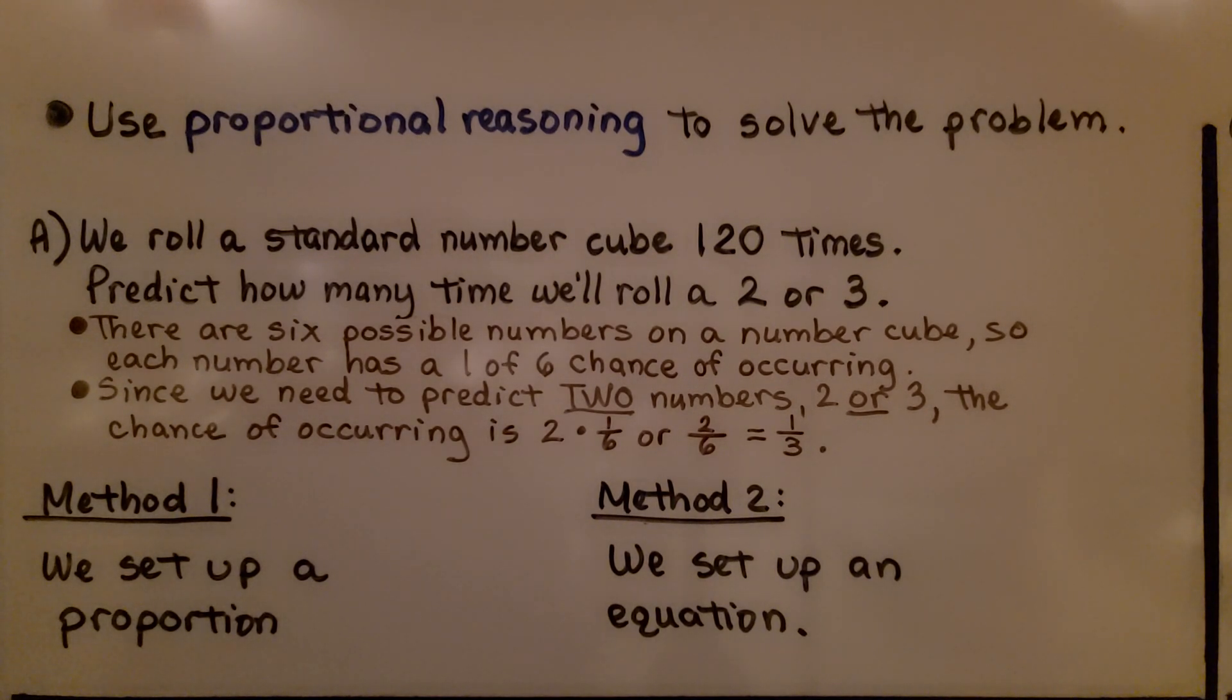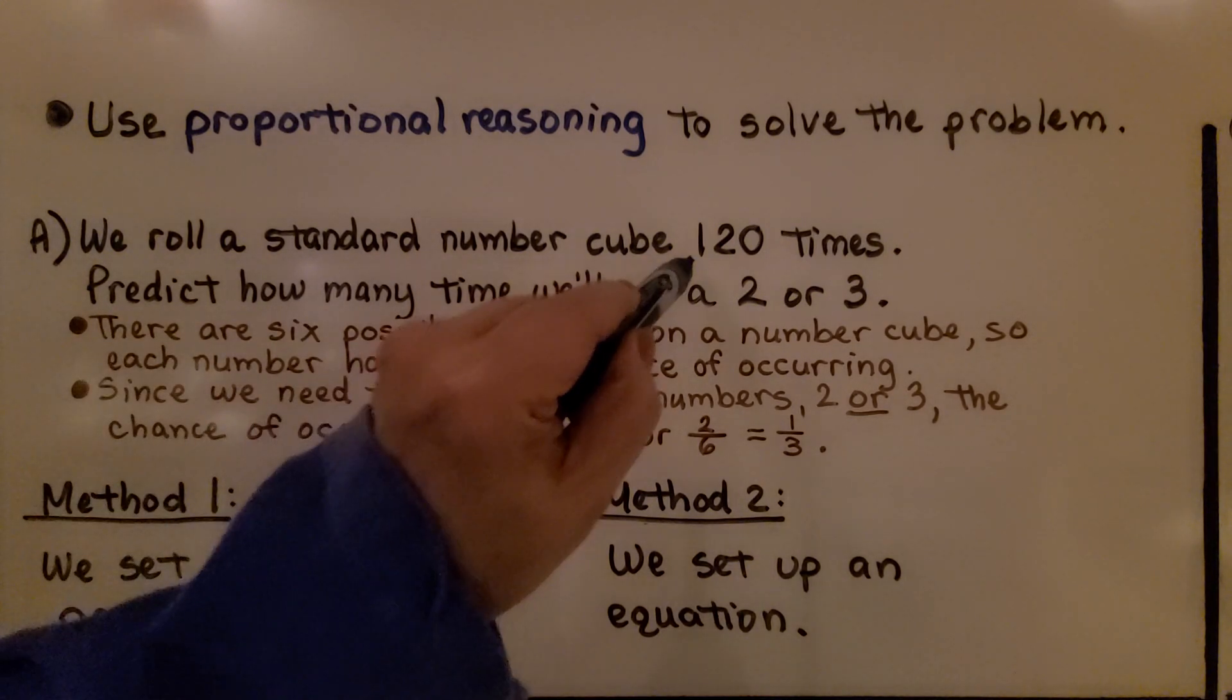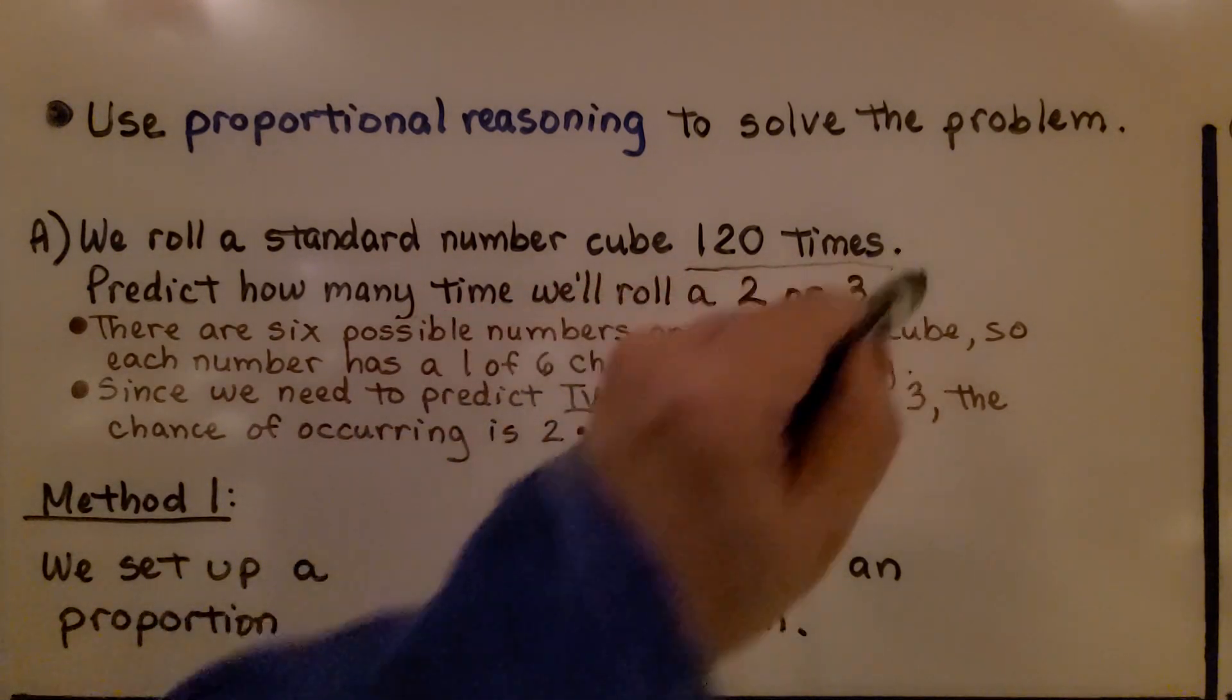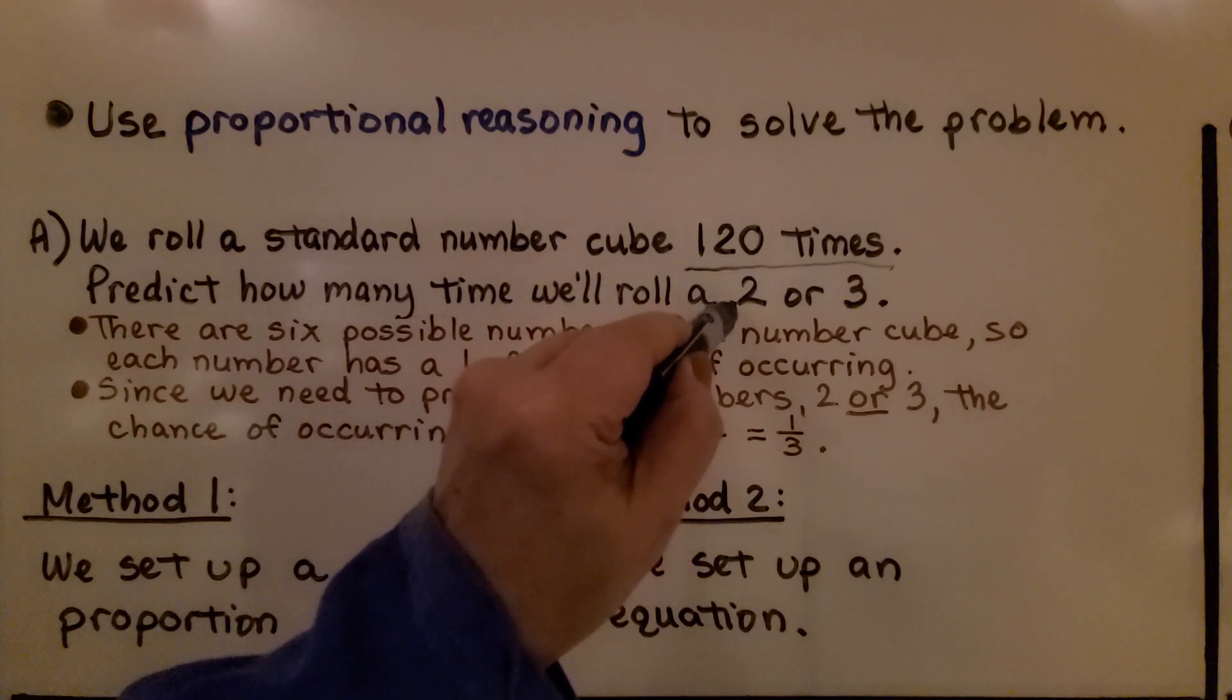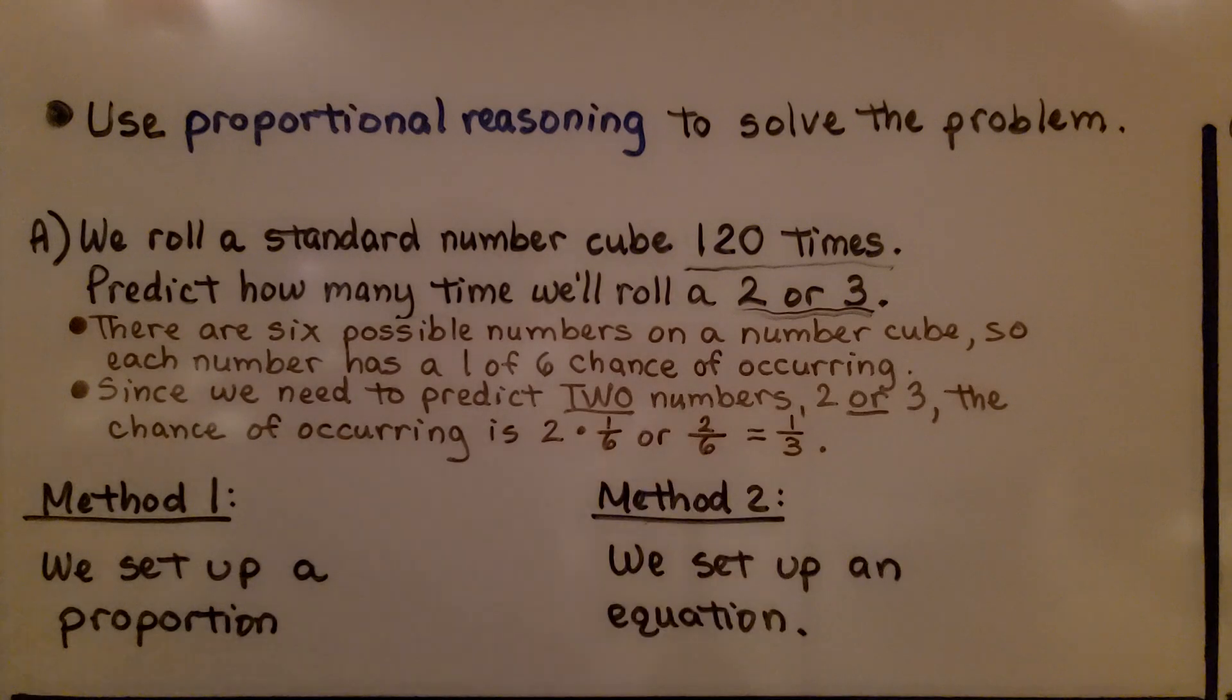Here it's telling us to use proportional reasoning to solve the problem. We roll a standard number cube 120 times. Predict how many times we'll roll a 2 or a 3. Now there are 6 possible numbers on a number cube,